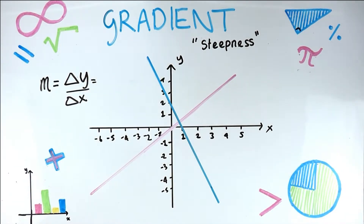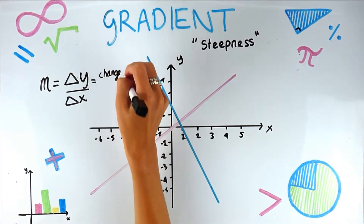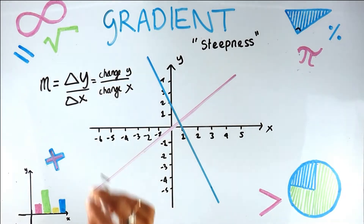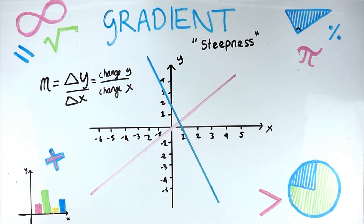So gradient equals change in y over the change in x. What is y and x here? From the diagram, y is the change in the y-axis and x is the change in the x-axis. So this is our formula: gradient is the steepness of a line — we're looking at straight lines here — and to work it out it's the change in y over the change in x.